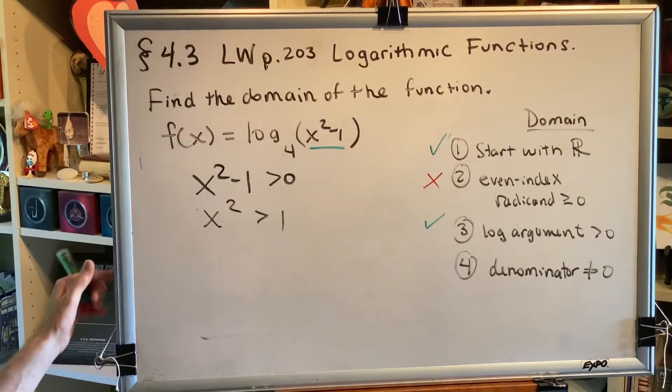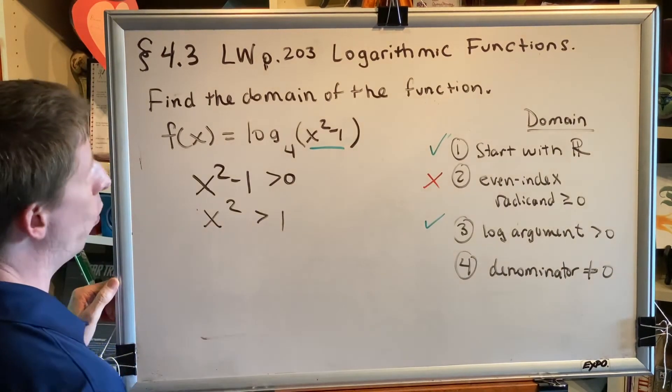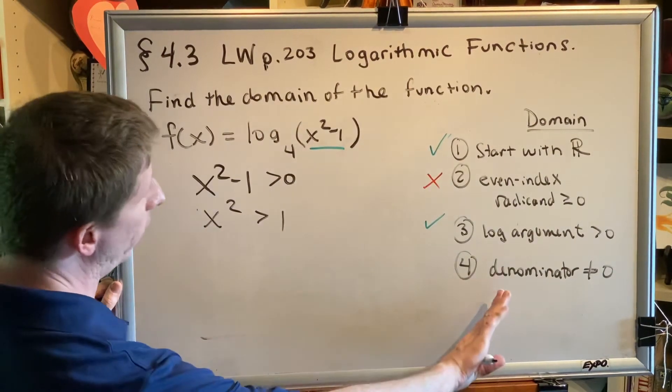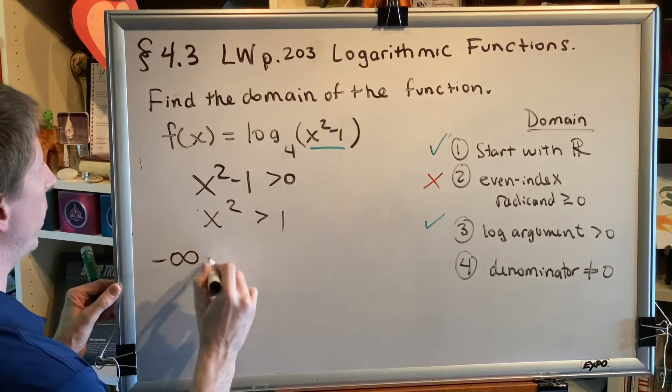Well, here's yet a third example of where we have an inequality involving the square. x squared will be greater than 1 if x is bigger than 1 or less than negative 1. So we get the following interval.